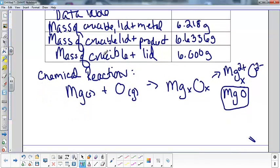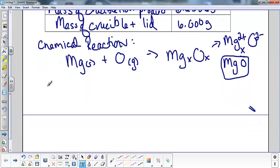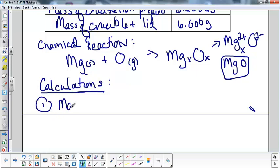Underneath, I want you to write down chemical reaction. If you didn't write that down, pause it and write it down. The next thing that you need to put into your lab notebooks is where it says calculations. For calculations, we're going to label them. If you remember correctly, the first one that we're going to have to find is the mass of the magnesium metal.